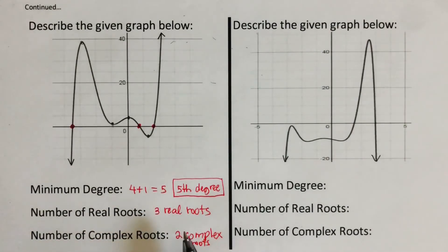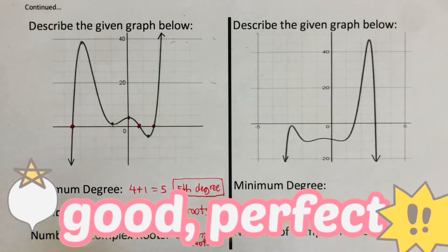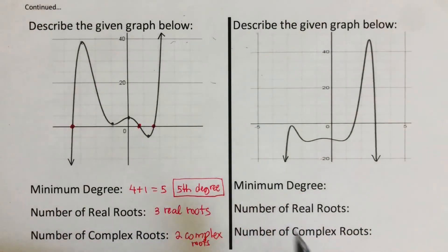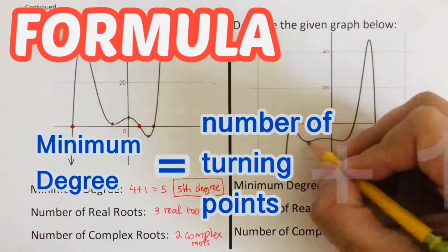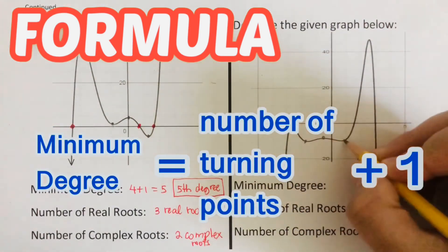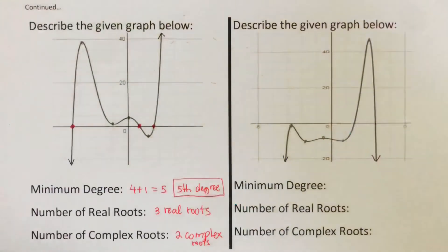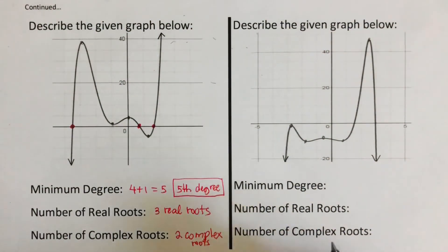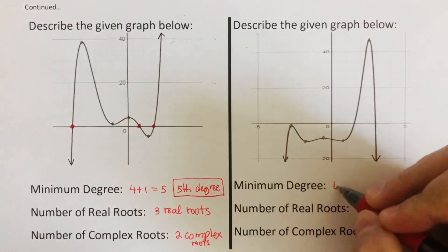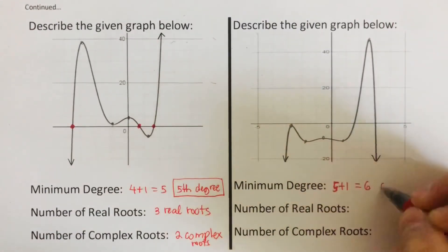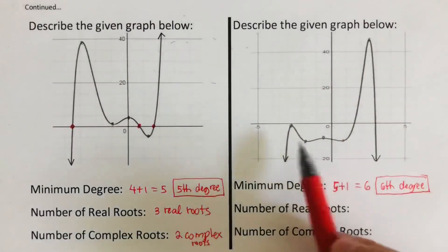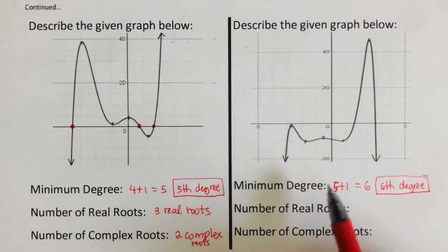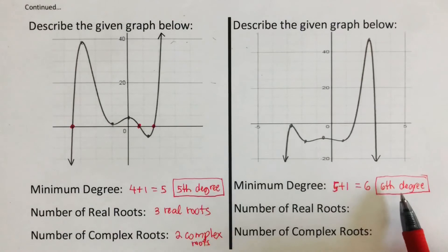Did you get the same answer? Good. Now let's move on to the next example. For the minimum degree, we count the turning points: one, two, three, four, and five. There are five turning points, so the minimum degree is five plus one equals six. This is a sixth-degree polynomial.